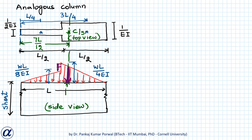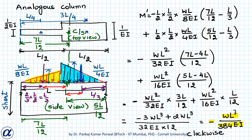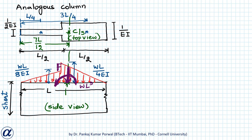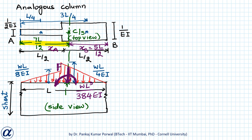Force F acts at the centroid. Since the net moment WL³/(384EI) is anticlockwise, edge A is at distance xA = 7L/12 from the centroidal axis and edge B is at distance xB = 5L/12 from the centroidal axis.